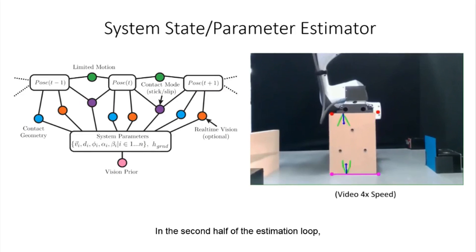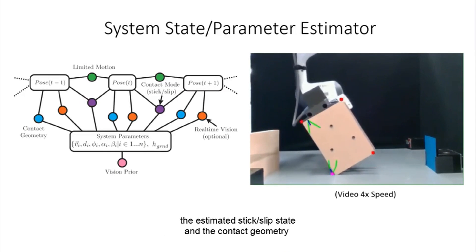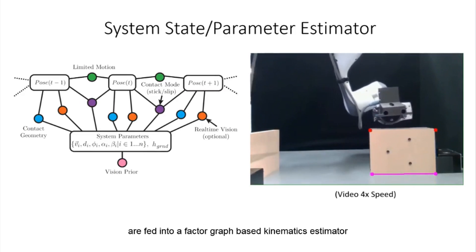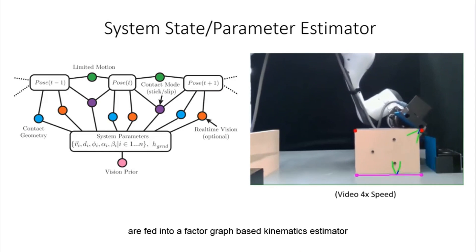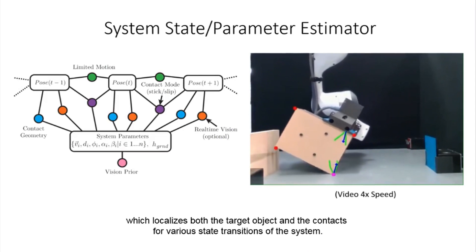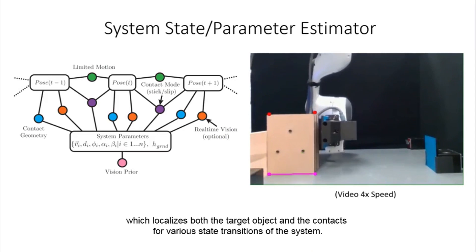In the second half of the estimation loop, the estimated stick slip state and the contact geometry are fed into a factor graph-based kinematics estimator which localizes both the target object and the contacts through various state transitions of the system.